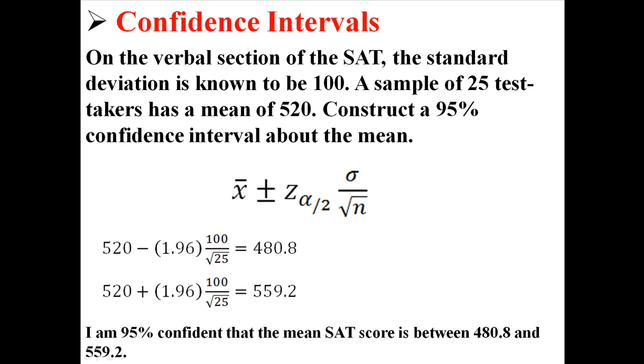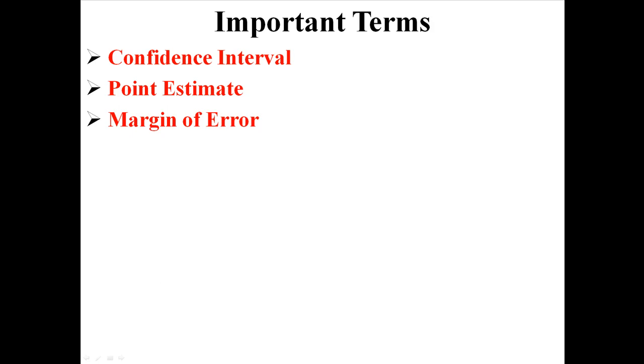So what that means is I am 95% confident that the mean SAT score is between 480.8 and 559.2. And that is a confidence interval, which is just point estimates and margins of error.